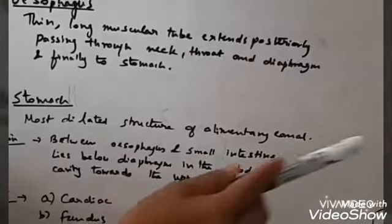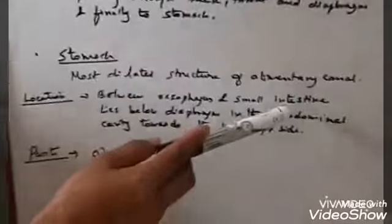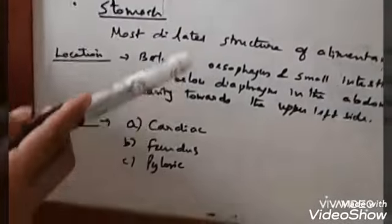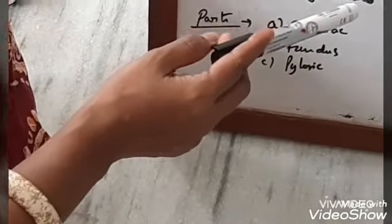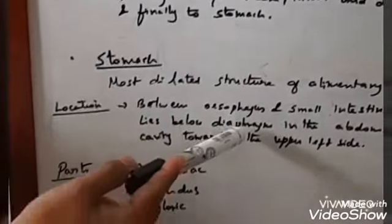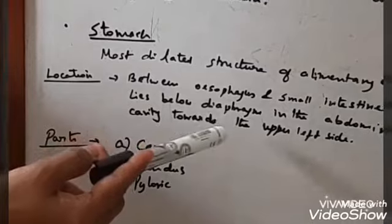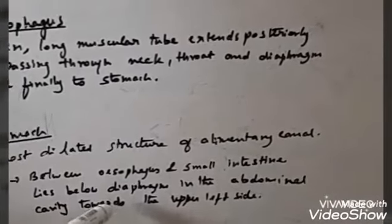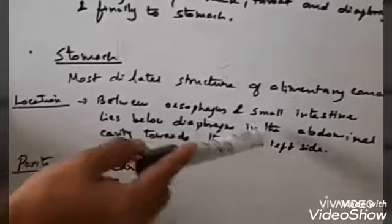The stomach is a pouch-like structure. It is the most dilated part of our alimentary canal. The location of the stomach is between the esophagus and the small intestine, and it lies below the diaphragm in the abdominal cavity, slightly towards the upper left side.